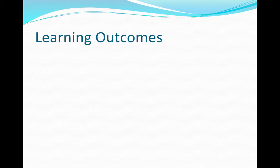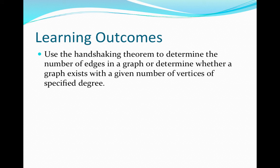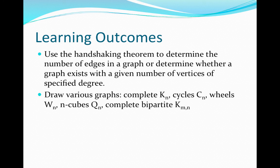Okay, so by the end of this section, you should be able to use something called the handshaking theorem to determine the number of edges in a graph, or determine whether a graph exists with a given number of vertices of specified degree. You should also be able to draw various graphs, the complete graph denoted by K sub n, where n is the number of vertices of that graph, cycles C sub n, wheels W sub n, n cubes Q sub n, and complete bipartite graphs K sub m n.